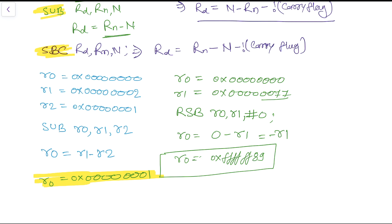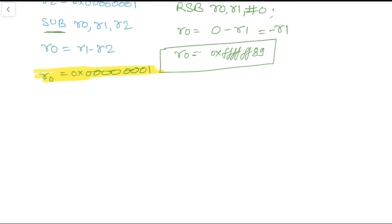Now let's look at the normal subtract instruction, but this time we add the suffix S. With SUBS, the instruction will update the Program Status Register. This means we can then perform conditional statements based on the updated status flags.